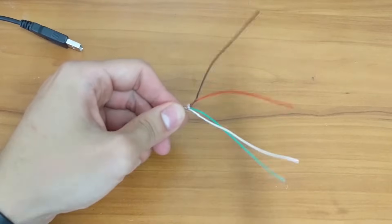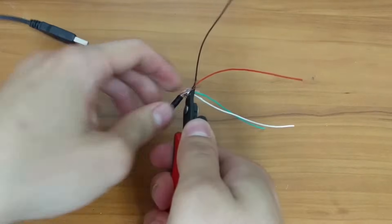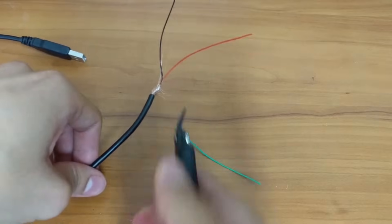The red and black wires will be our power and ground wire. The other data wires are not needed, so we can just clip them.